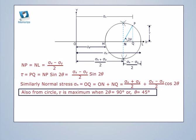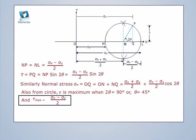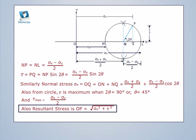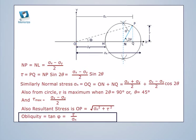Also, from circle tau is maximum when 2 theta is equal to 90 degree, or theta is equal to 45 degree. And tau max is equal to sigma x minus sigma y upon 2. Also, resultant stress is op is equal to under root sigma n square plus tau square. Obliquity is equal to tan phi is equal to tau divided by sigma n.